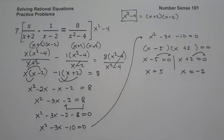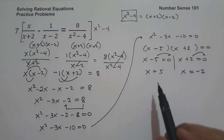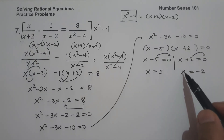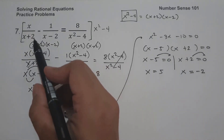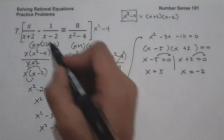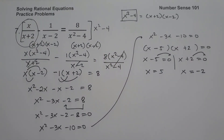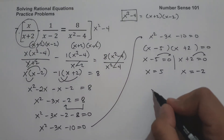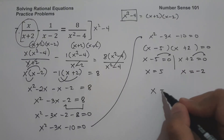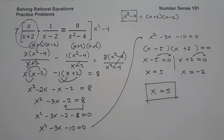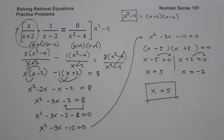Since we have two values of x — 5 and negative 2 — we need to check for extraneous solutions. Substituting negative 2 into the original equation gives an undefined result. Therefore, the only valid solution is x equals 5, and this will be our answer. I hope you've learned from this lesson. Thank you so much for watching and God bless us all.